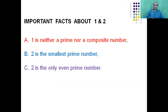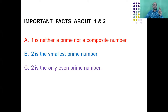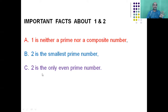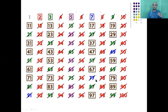1 is neither a prime number nor a composite number. 2 is the smallest prime number — because 2 has only two factors: 1 and 2 itself. Also, 2 is the only even number which is prime. This is very important for MCQ questions — remember: 1 is neither prime nor composite, 2 is the smallest prime number, and 2 is the only even prime number.